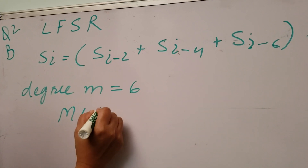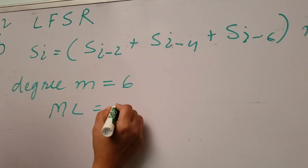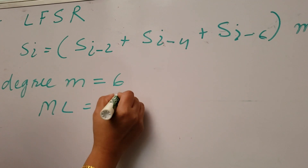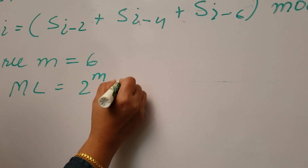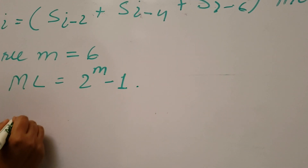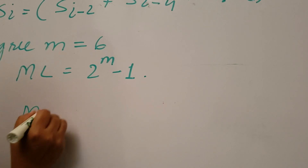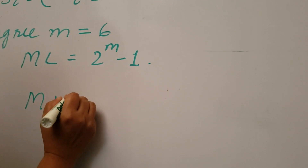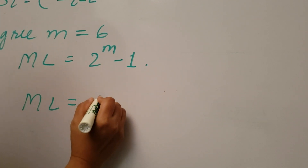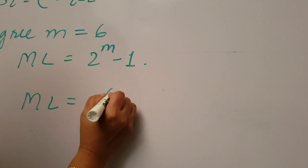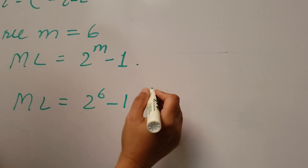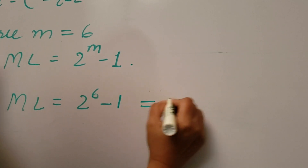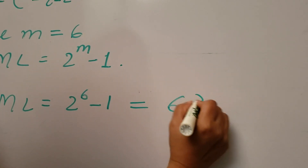The maximum length formula is 2 to the power m minus 1, where m is the degree. So the maximum length is 2 to the power 6 minus 1, which equals 63.